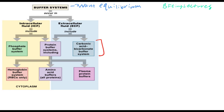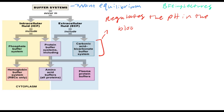Focusing on the extracellular fluid systems, the most important extracellular fluid buffer system is the carbonic acid bicarbonate buffer system. This system actually helps regulate the pH in the blood. Most organisms have blood, so they utilize the carbonic acid bicarbonate buffer system in order to regulate the pH in their blood.